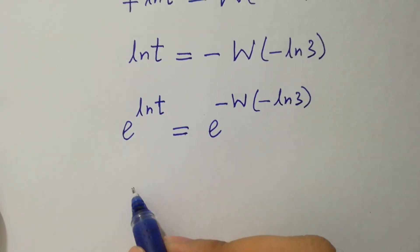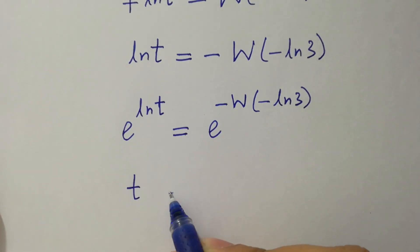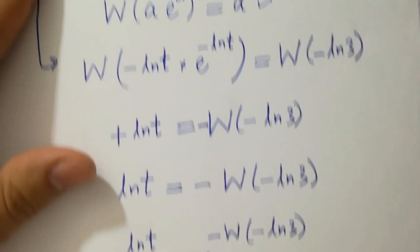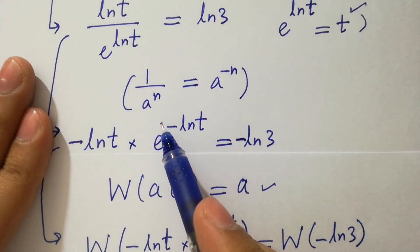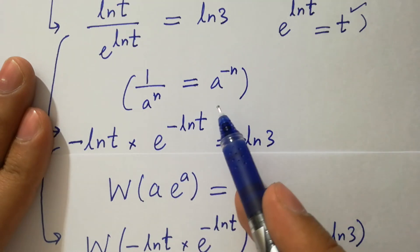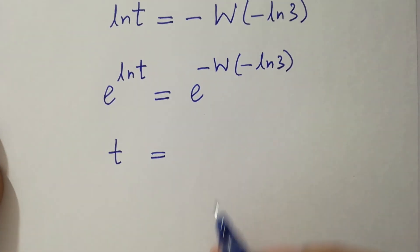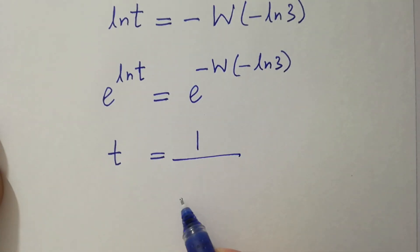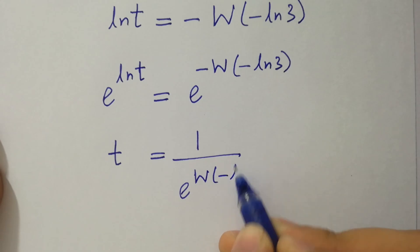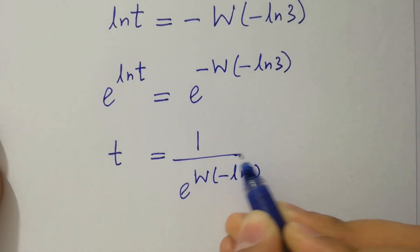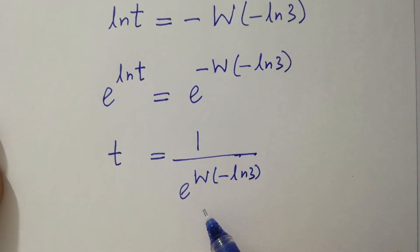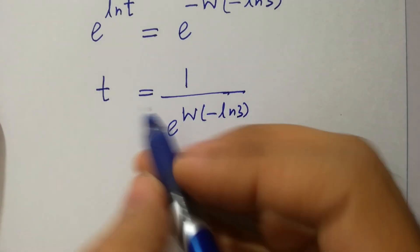So it will be t equal to and 1 over a to the power n equal to a to the power minus n. So here it will be 1 over e to the power w minus ln 3 which is a complex number which is our final answer.